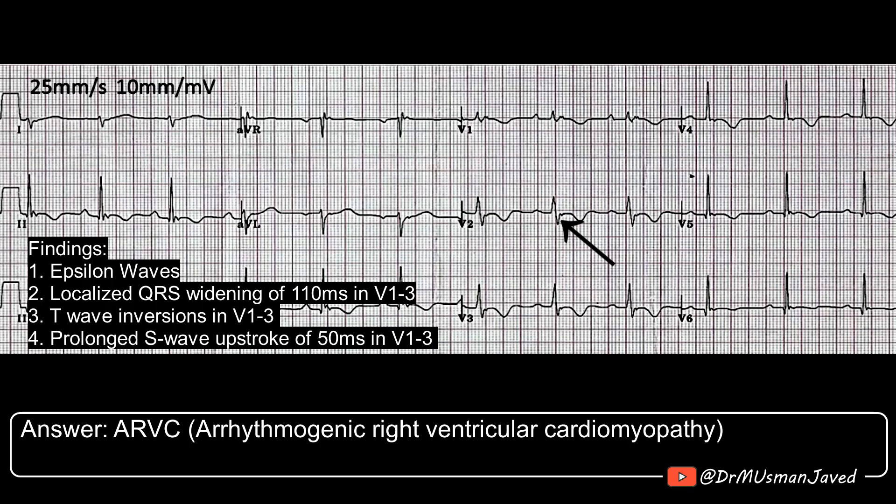All these findings together are suggestive of ARVC — Arrhythmogenic Right Ventricular Cardiomyopathy.